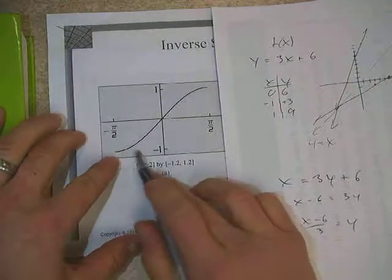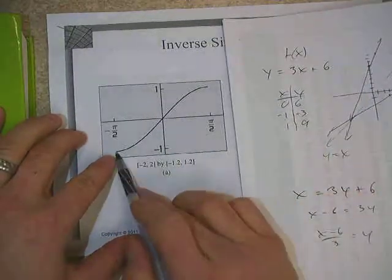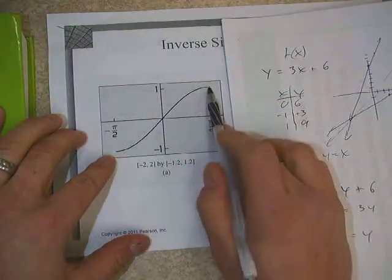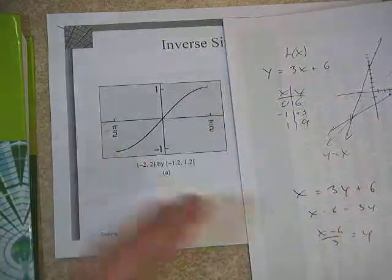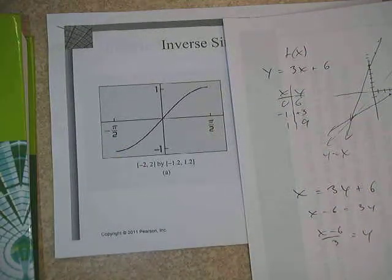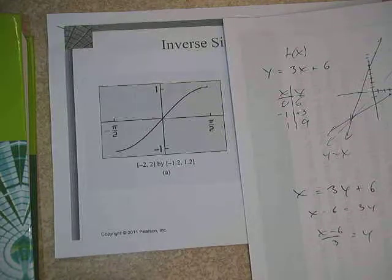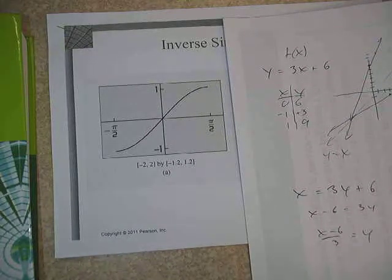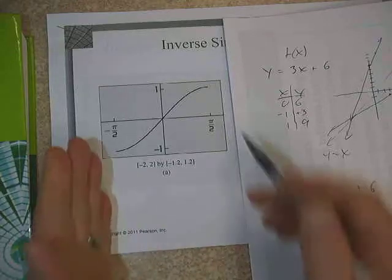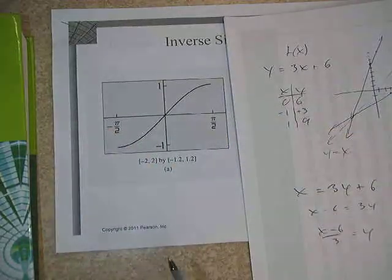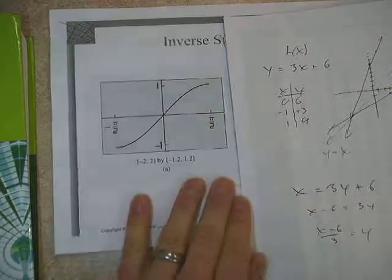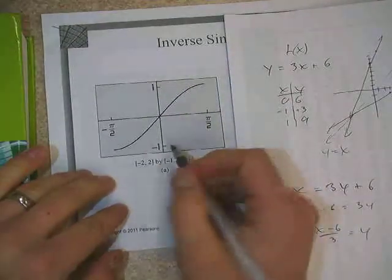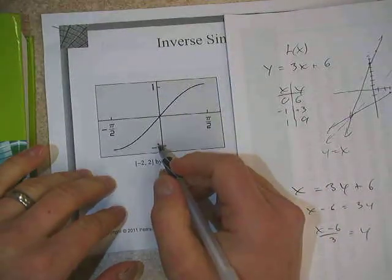Therefore, what we've done here as mathematicians is we've decided to restrict the domain of the sine function to just between negative pi over 2 and pi over 2, because if we just took that portion only, then it would be one-to-one. And then if we do that, we can talk about this thing having an inverse function as long as we're talking about just between negative pi over 2 and pi over 2.